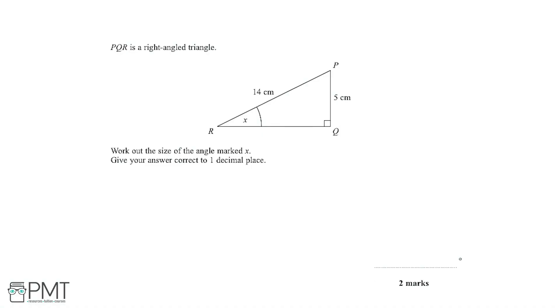So PQR is a right angle triangle and we can see a little diagram of that triangle here. We need to work out the size of the angle marked x and give our answer to one decimal place. This is for two marks.